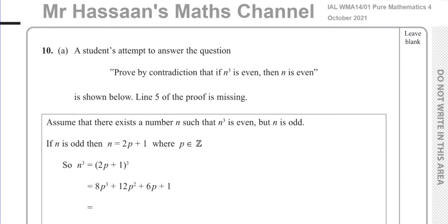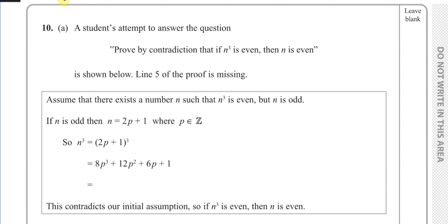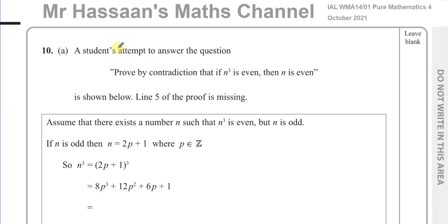In part A, they've given us an example of how it works, and we have to fill in just one line of it — that's pretty simple. It says a student's attempt to answer the question: prove by contradiction that if n cubed is even, then n is even. So first of all, let's understand what this means. We have to prove this statement is true: that if n is an even number and you cube it, you're going to end up with an even number. So if n cubed is even, then what you cubed to get that even number must have been even itself. That's what we have to prove — but we have to prove it in a bit of a strange way, by contradiction.